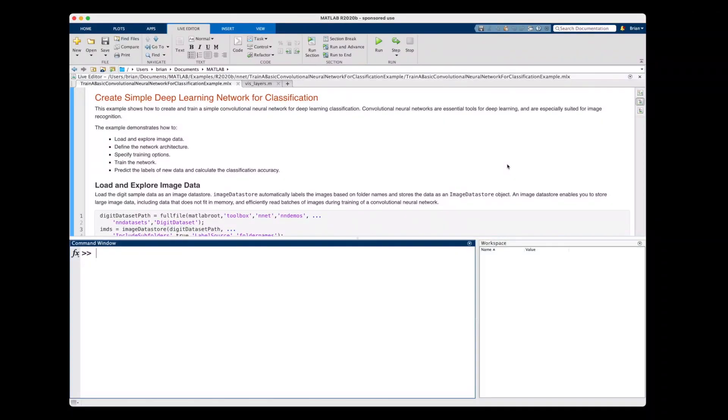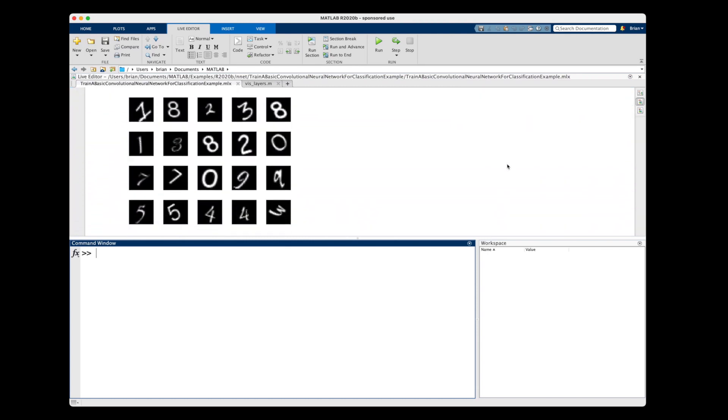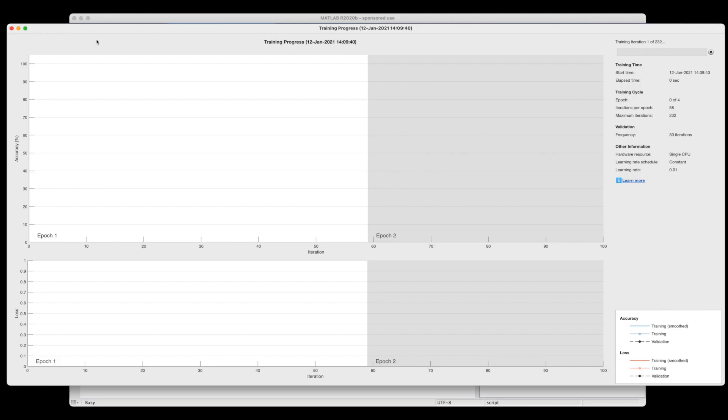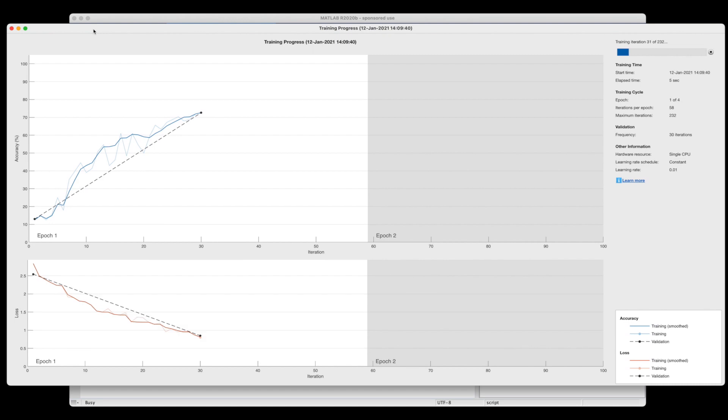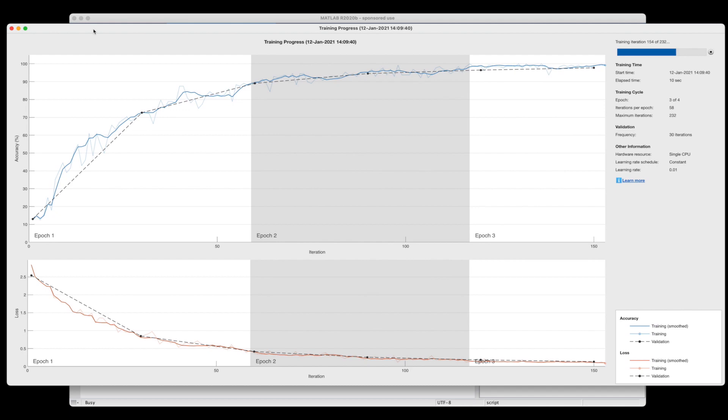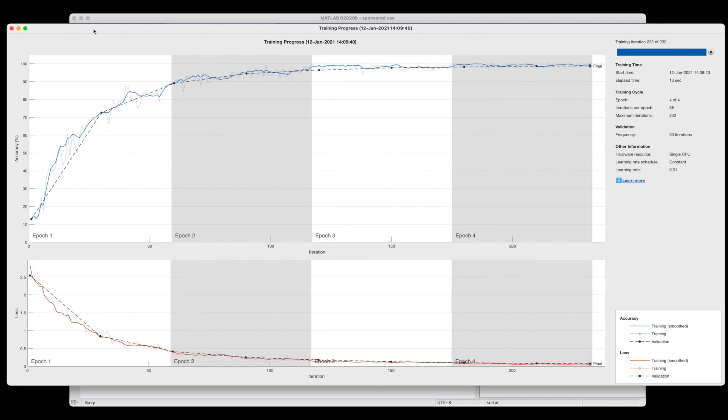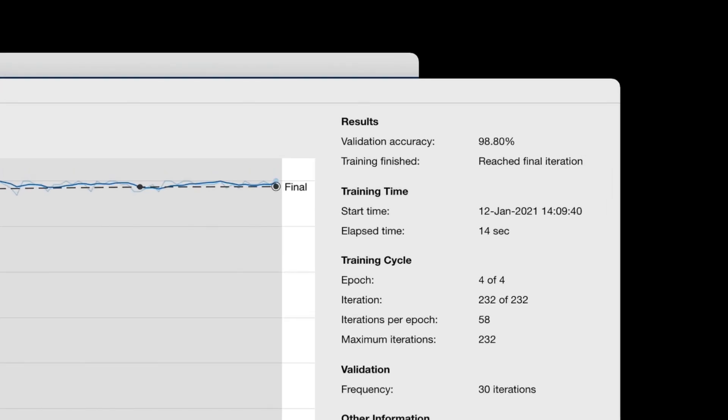To show you what I mean, let's run the MATLAB example called Create Simple Deep Learning Network for Classification that ships with the Deep Learning Toolbox. This example trains a neural network to recognize handwritten numbers. This example trains the network using 750 labeled images for each of the 10 numbers. It then uses 250 images for each number to verify the accuracy of the network, which we can see here is about 99% accurate. So, not too bad.